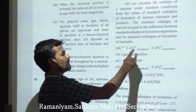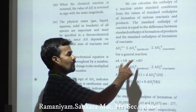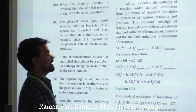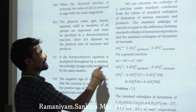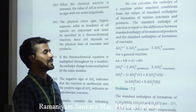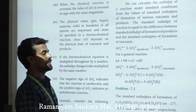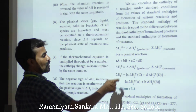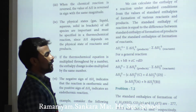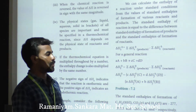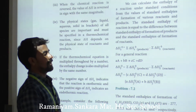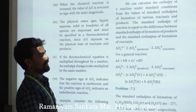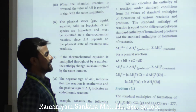Product minus reactant — this is important. For the general reaction aA + bB → cC + dD, delta H = delta H°f (products) minus delta H°f (reactants), where the small letters represent number of moles.